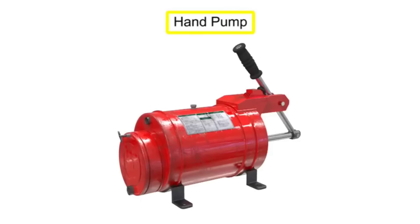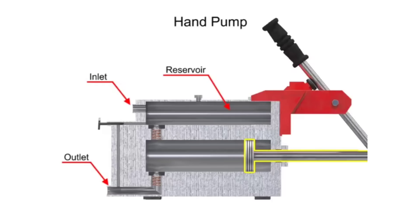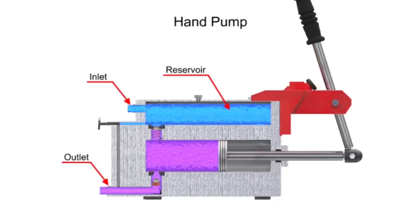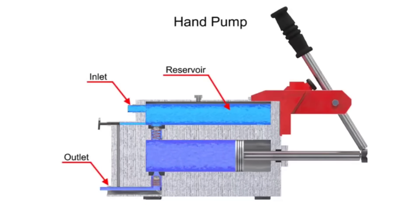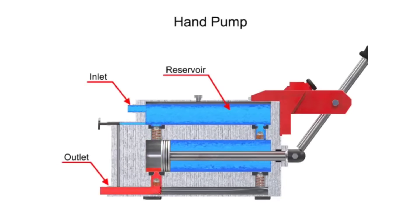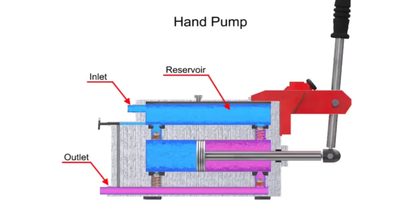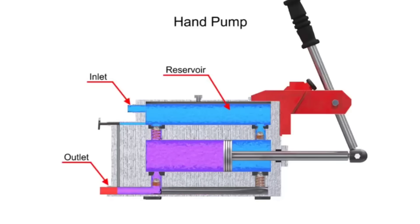Hand pumps are used when a source of power is not available or where the extra expense of a power pump isn't warranted — for example, on shop presses and other portable equipment, as standby pumps, or as sources of emergency power. Hand pumps are always of piston type and are usually constructed with a piston working between two check valves. Double acting hand pumps are more efficient, allowing fluid to both enter and discharge on both strokes of the piston. Moving the pump handle in either direction allows fluid to be drawn in from the reservoir and discharged via the outlet ports. Check valves in all locations prevent fluid backflow.